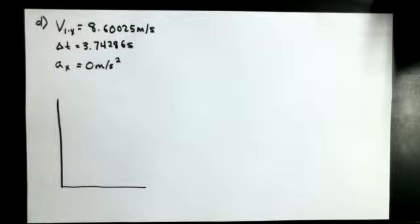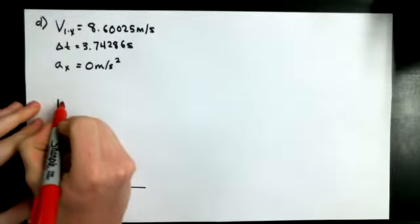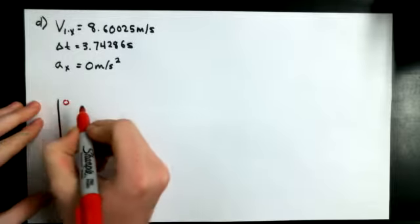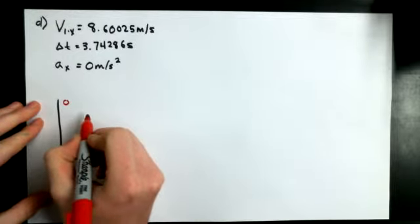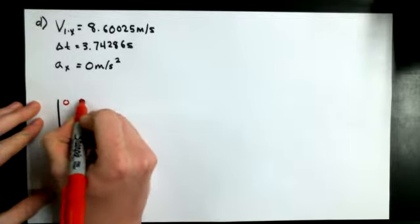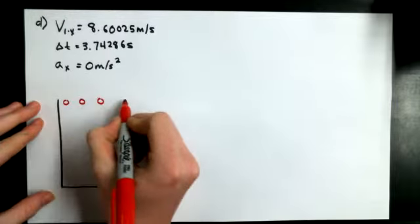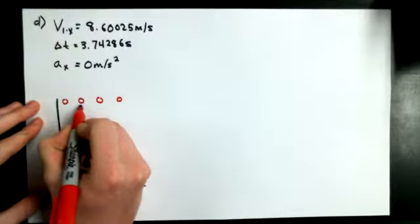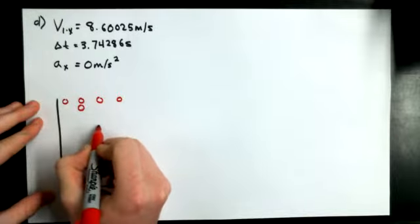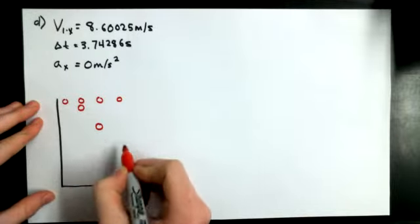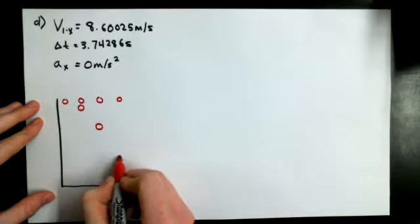And acceleration equals 0 meters per second squared. So acceleration in the x direction is going to equal 0, because we know that when any kind of thing falls, it's going to be increasing in the y direction, so it's going to be accelerating. But in the x direction, it's still going to be staying the same, so there really is no acceleration.